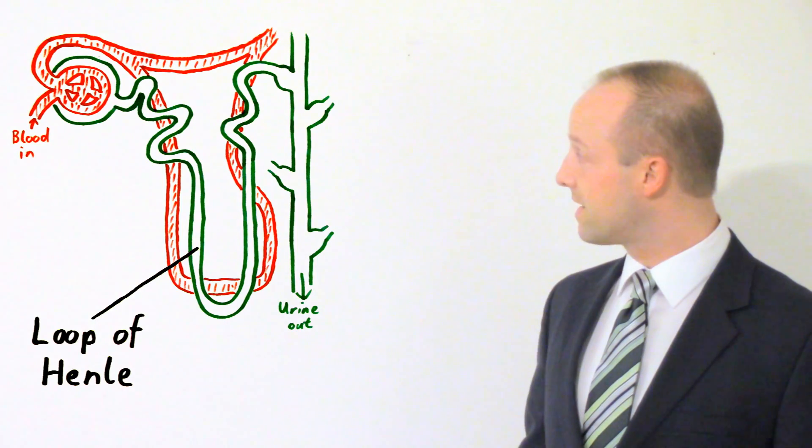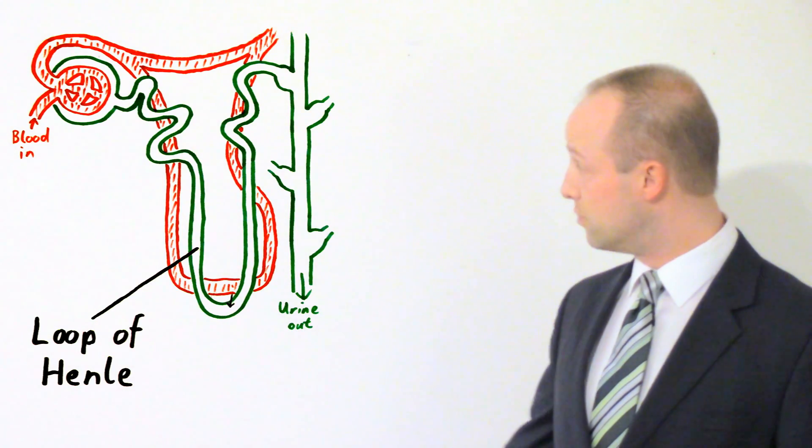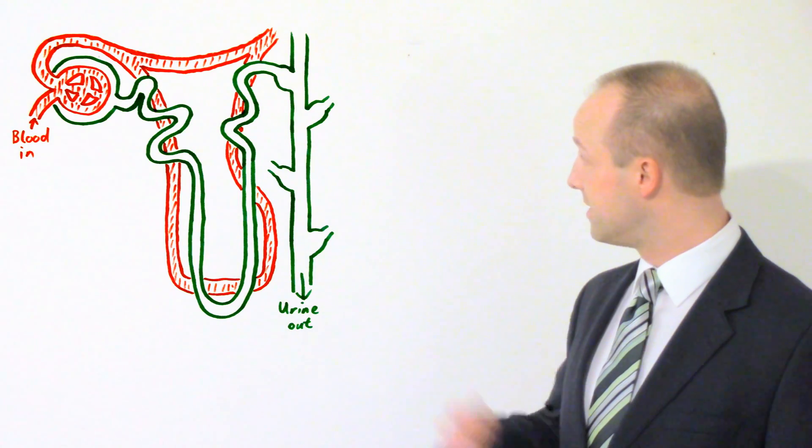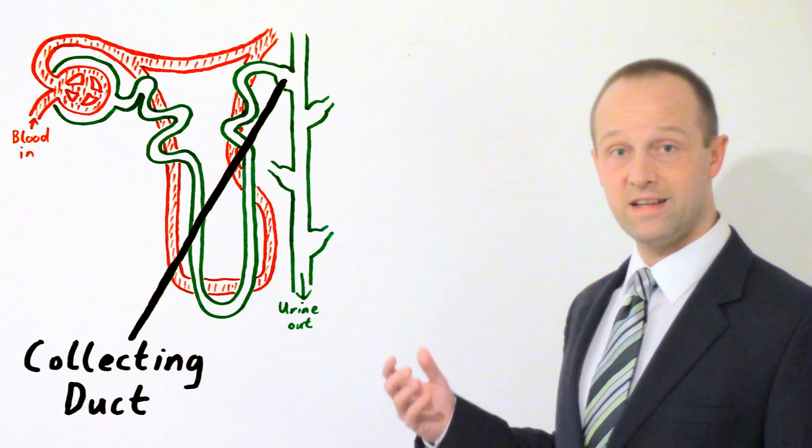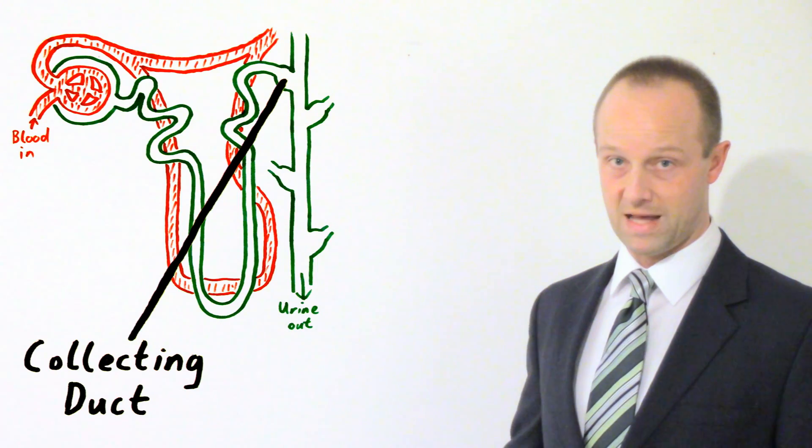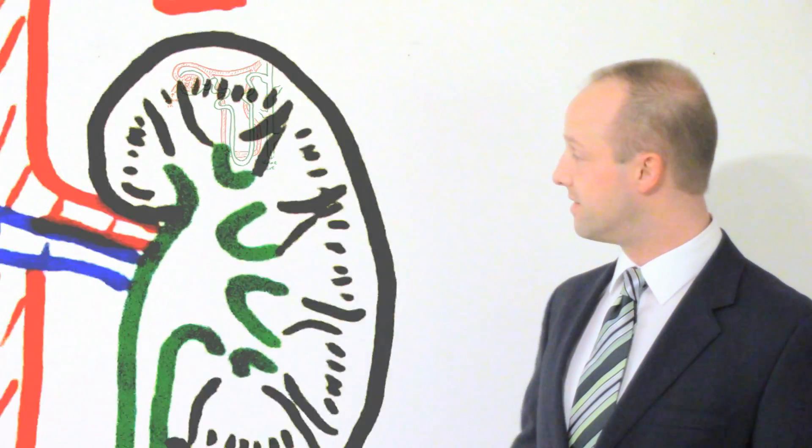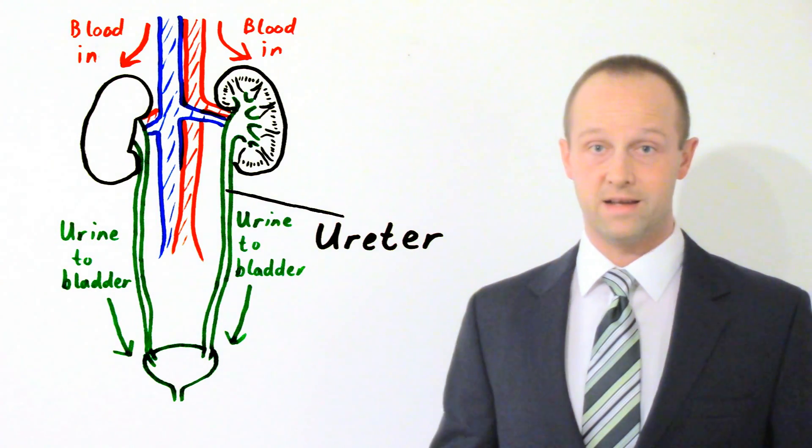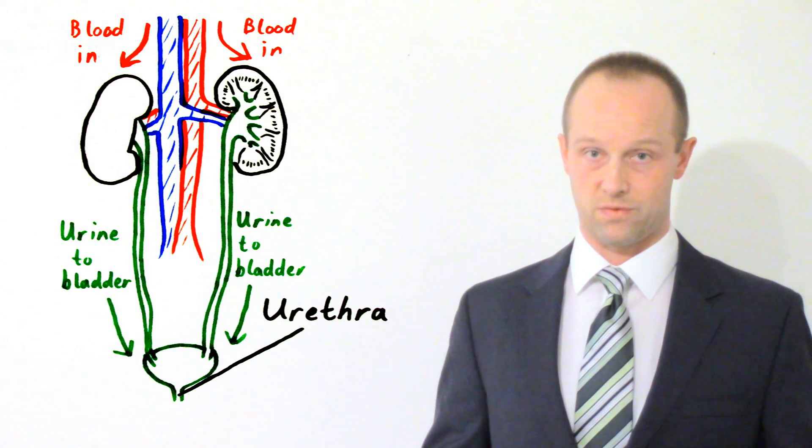You also may get some of these dissolved ions passing out. You may not. The urea shouldn't be getting out of here. And then it makes its way finally to this tube which collects it and then passes it down into the bladder. The tube going down into the bladder is known as the ureter. And then the bladder is drained by the urethra.